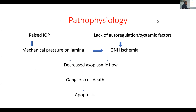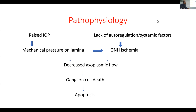What is the pathophysiology of glaucoma? There is raised intraocular pressure, which will cause mechanical pressure on the lamina. The lamina is a sieve-like structure in the sclera from where axon nerve fiber layers pass to the optic nerve. Mechanical pressure on the lamina will block flow in the nerve fibers, leading to ganglion cell death or apoptosis.